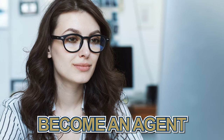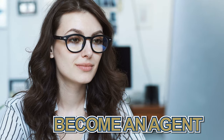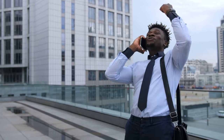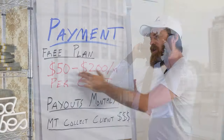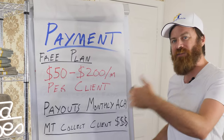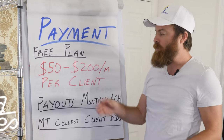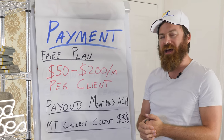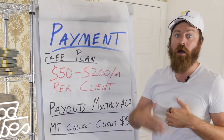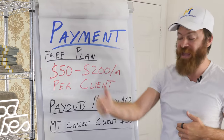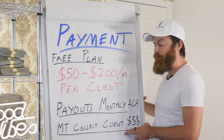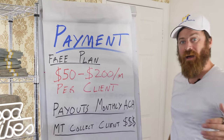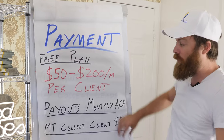The payouts are done through monthly ACH. So every time you sign up a client, you get $50 to $200 passive income. You can make up to $300 per client if you are on one of our paid plans. And Marketing Tech collects the client money for you.